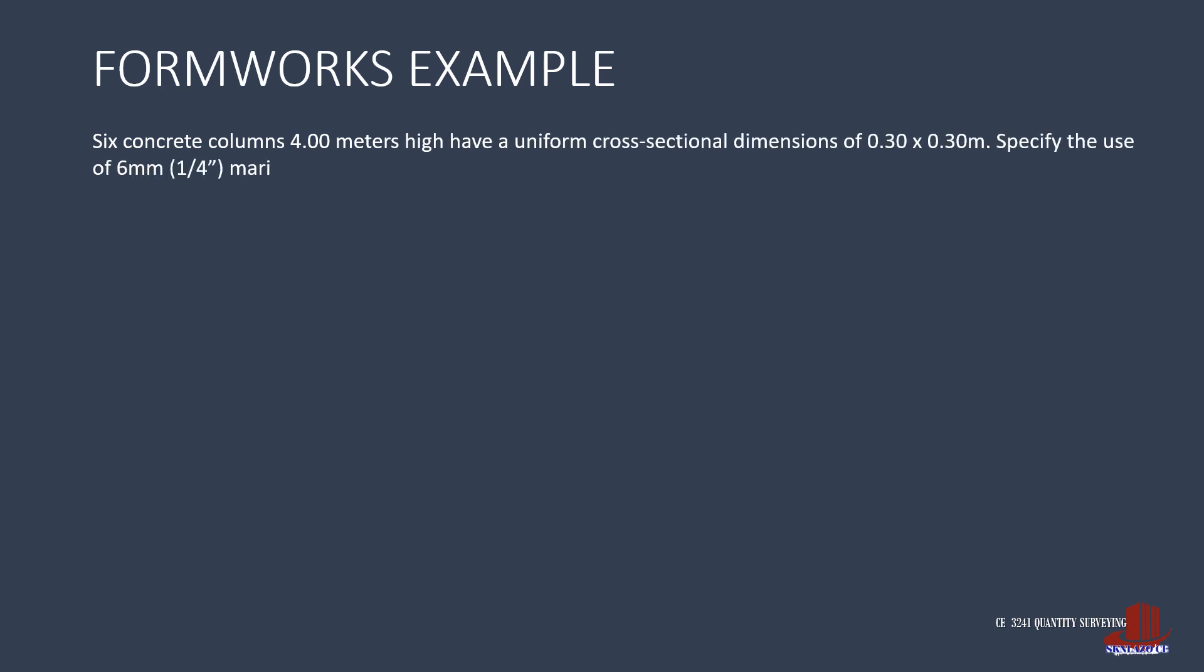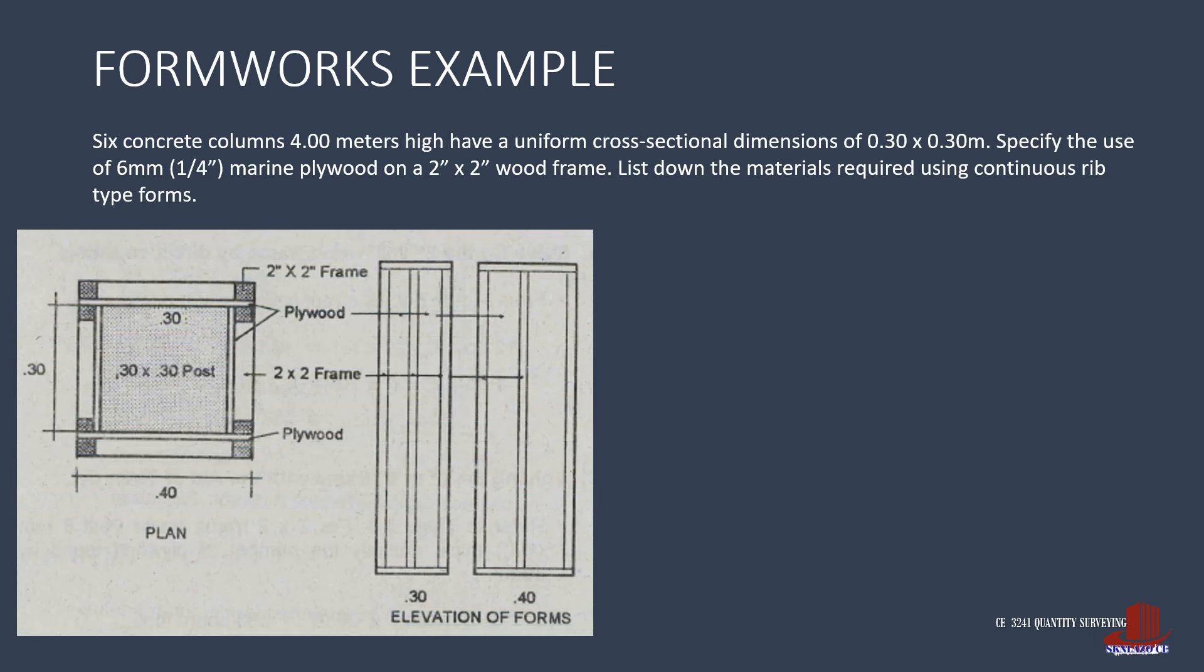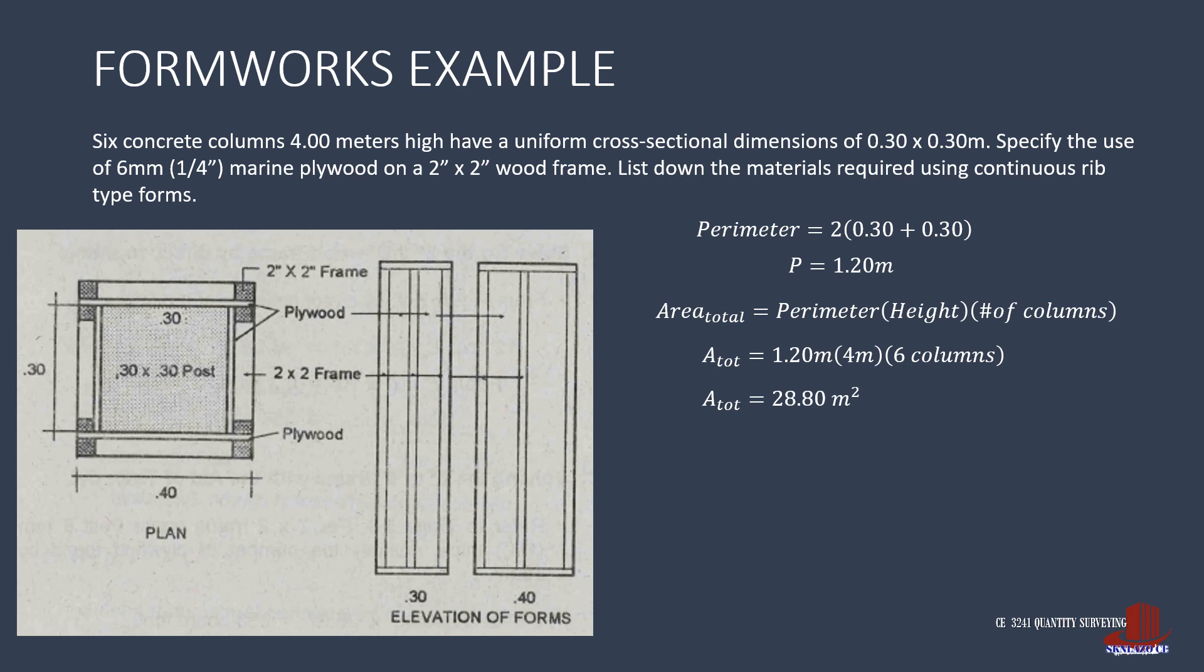With a similar example, let's check the difference of answers. So the perimeter is twice of the summation of 0.3 sides of the column, resulting in 1.2 meters. Now, the total area is 1.2 times the height of 4 meters for the 6 columns, which is 28.8 square meters.